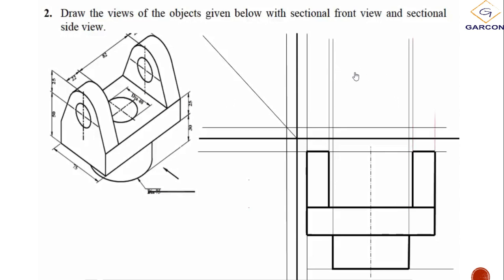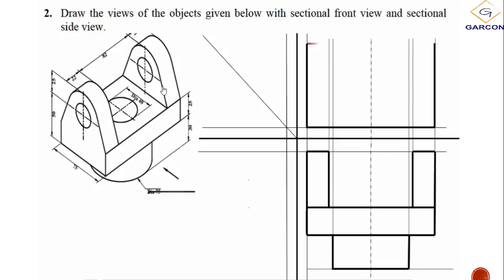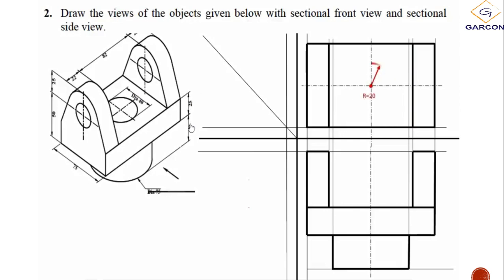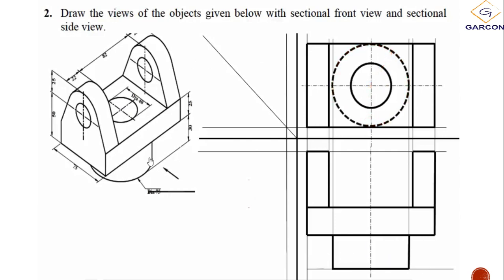Now we produce the plan. The plan is looking from above downward. We project the lines upward from the front view, then form the circle of radius 20 — the diameter is 40, so the radius is 20. The larger circle below, which cannot be seen from above, is drawn in hidden broken lines.